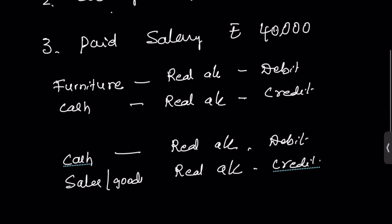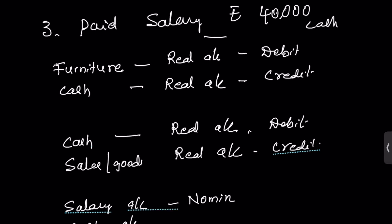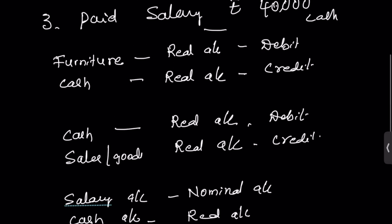Next example: salary paid. Salary is paid in terms of cash. Two accounts: salary account and cash account. Salary is a nominal account; cash is a real account. The rule for nominal account says debit all expenses and losses — salary is an expense, so salary account is debited. Cash is going out of the business — the rule for real account says credit what goes out — so cash account is credited.